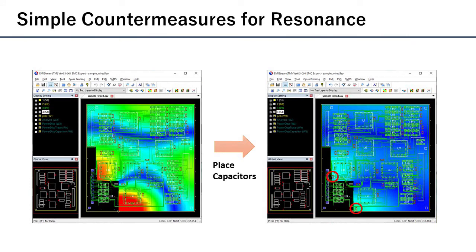As a countermeasure against resonance, place capacitors at the hotspot. This reduces voltage variation between the power and ground.